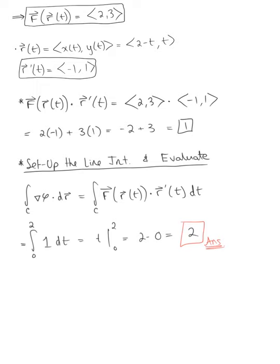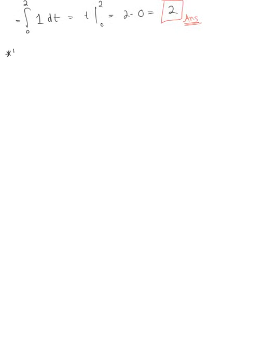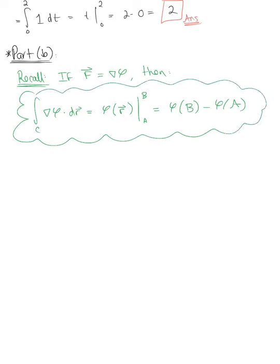That was part a, evaluating using a parametric description of our curve. Now for part b, we want to do the same thing but use the fundamental theorem of line integrals. We recall that if we have a conservative vector field with f equal to the gradient of phi, then the line integral is path independent. The line integral over c of the gradient of phi dot d vector r equals phi evaluated at the endpoints a to b, giving phi(b) minus phi(a).